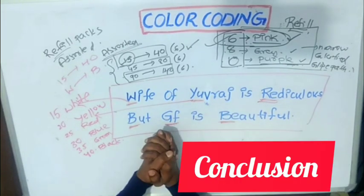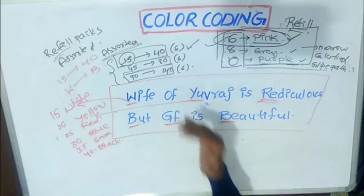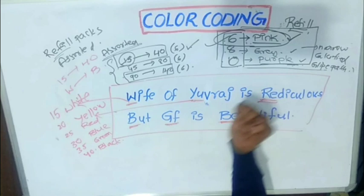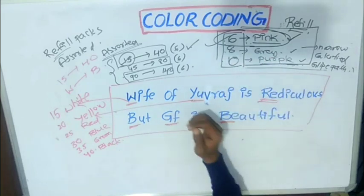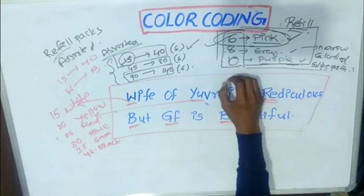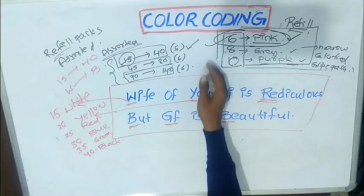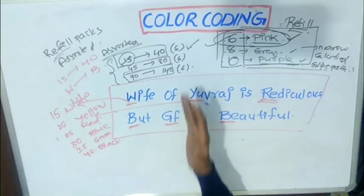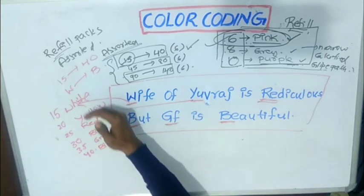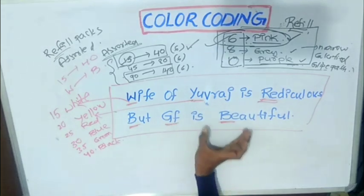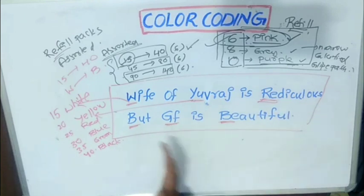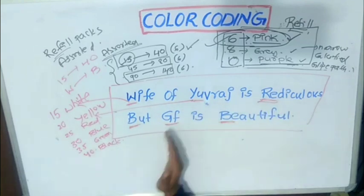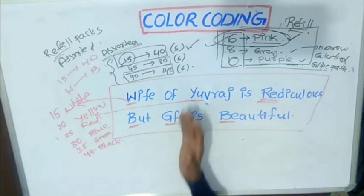To conclude about the color coding of endodontic instruments: according to ISO standardization, instruments range from 6 to 140. Number 6 has pink color, 8 has gray color, and 10 has purple color — concentrate on these three as they are the most frequently asked in MDS entrance examinations. From 15 to 40, 45 to 80, and 90 to 140, you have a similar sequence from white to black. The mnemonic is: 'Wife of Euras is ridiculous, but girlfriend is beautiful' — where wife = white, Euras = yellow, ridiculous = red, but = blue, girlfriend = green, and beautiful = black. I hope you enjoyed the session. Thank you.